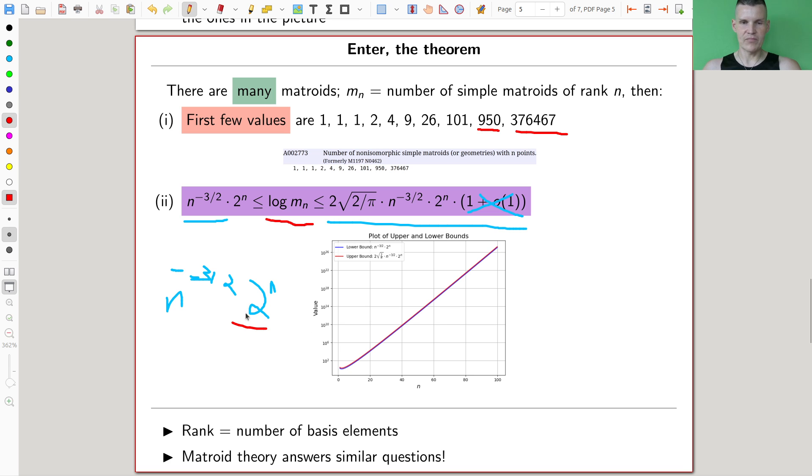So ignore this 1 over O of 1, 1 plus O of 1. You can ignore it. Let's ignore it. If you don't know what it is, ignore it. So this really says that you have this n. It's not terribly important. And then you have the 2 to the n. 2 to the n is kind of squeezing everything anyway. And on the other hand, so this is the lower bound. On the other hand, you have the upper bound, which is almost the same. The only difference is you have a factor of 2 times square root of 2 over pi.